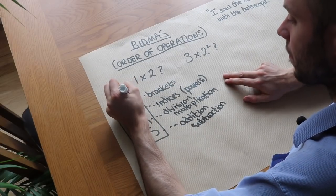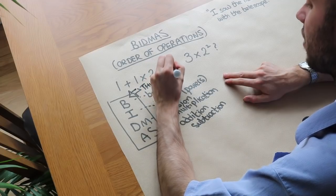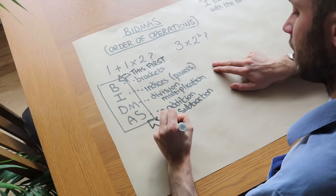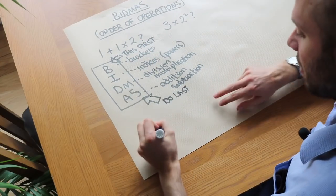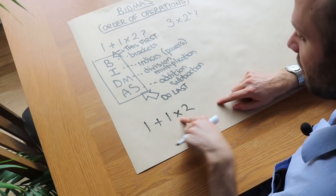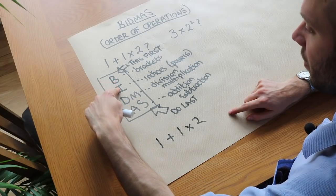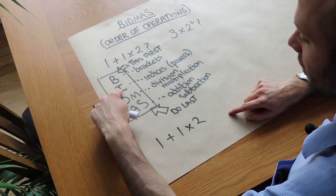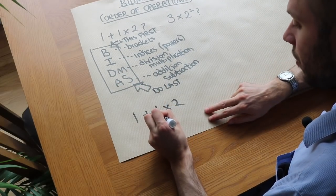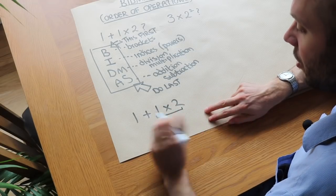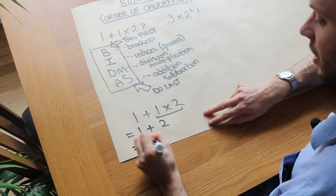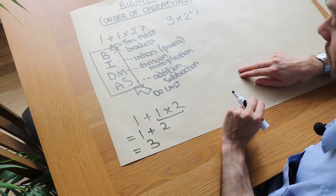Brackets have the highest priority, the highest precedence, and we do anything at the bottom of BIDMAS last. If we apply this to 1 plus 1 times 2, we have an addition and a multiplication. There are no brackets, no indices, but we do have a multiplication, so we do that first. 1 times 2 is 2, so we now have 1 plus 2, and that addition gives us 3. So the answer is 3, not 4.